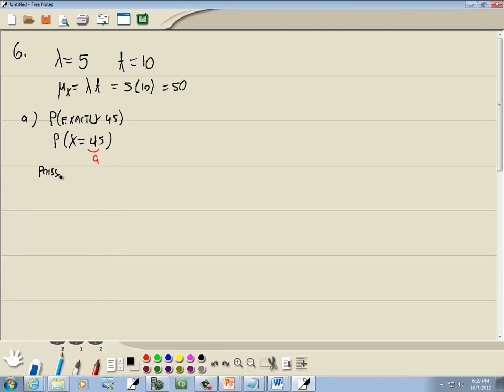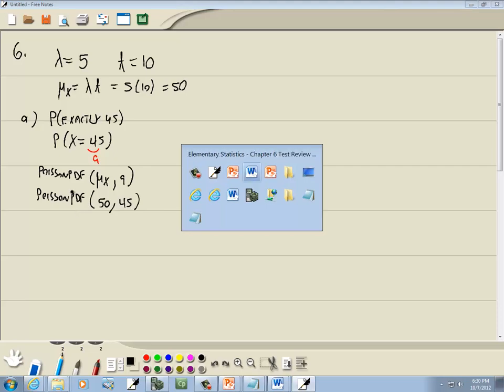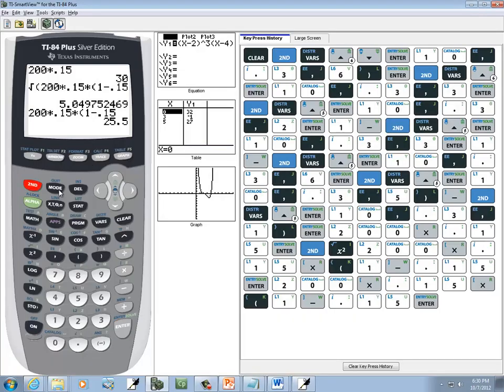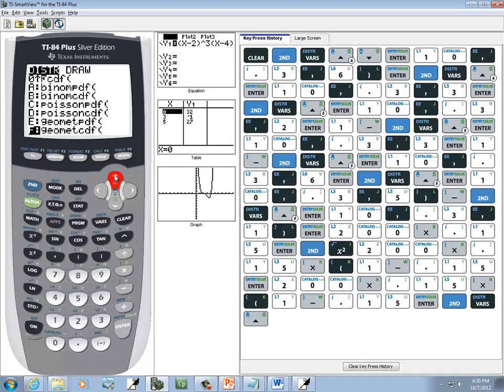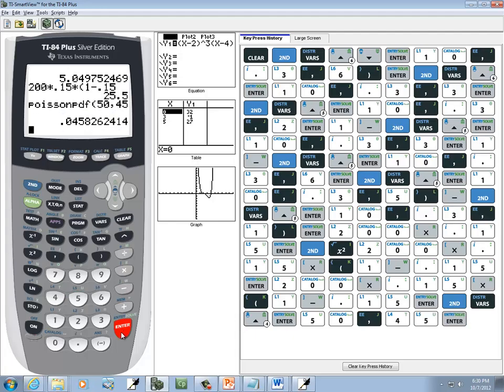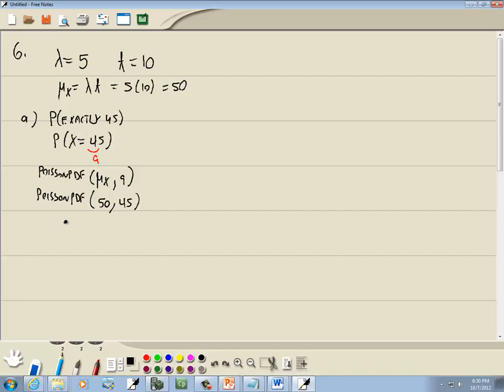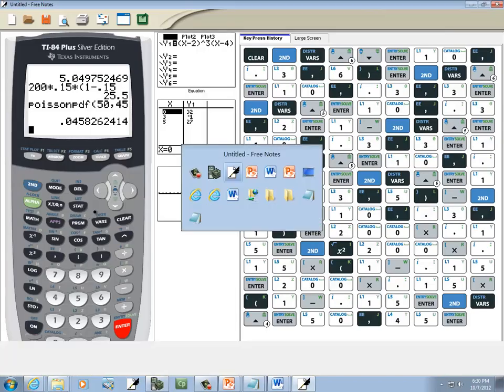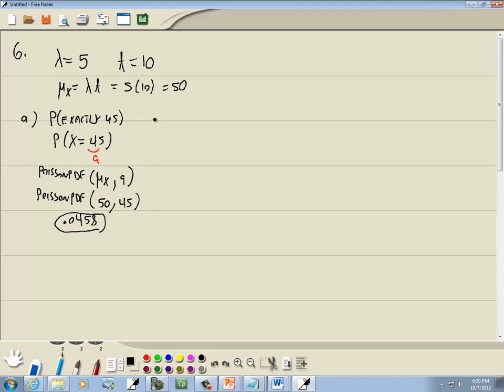It tells us this is going to be Poisson PDF, mu sub x, comma, a. So this is going to be Poisson PDF, our mean, which is 50, comma, a, which was 45. So, I'm going to do second, vars, up arrow to Poisson PDF, and then with 50, comma, 45. Enter. And for four decimal places, we'll have 0.0458, and that's our answer to part A.